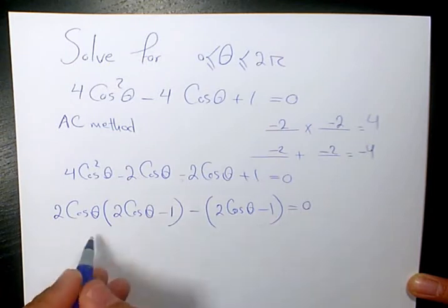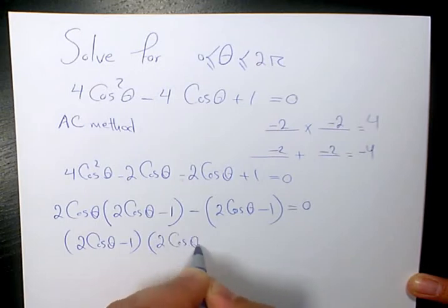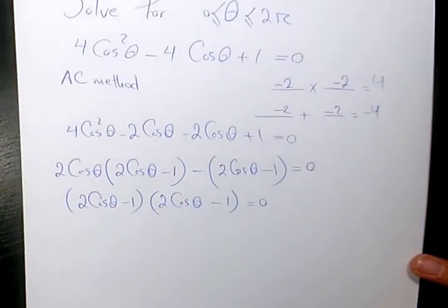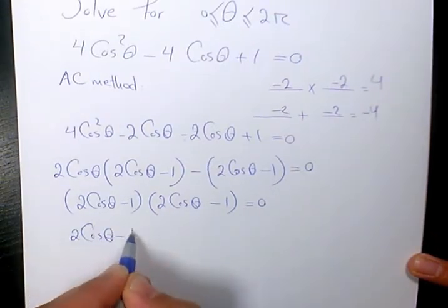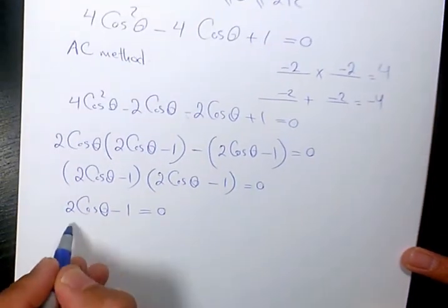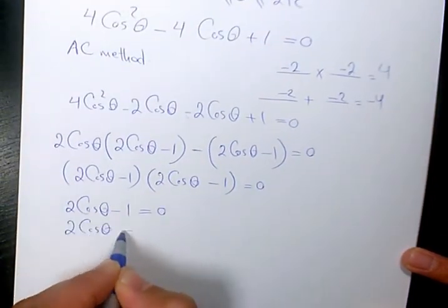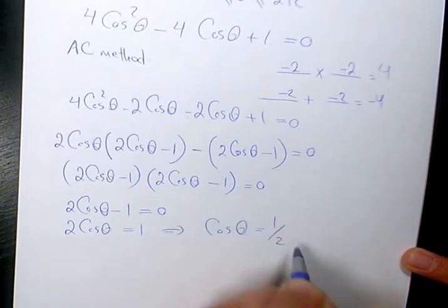Then I need to factor this term, which is 2 cosine theta minus 1. The other one is going to be the same thing, 2 cosine theta minus 1 equals to 0. So since it's the same thing, it means that 2 cosine theta minus 1 has to be equal to 0, meaning that 2 cosine theta equals to 1, or cosine theta equals to 1 over 2.